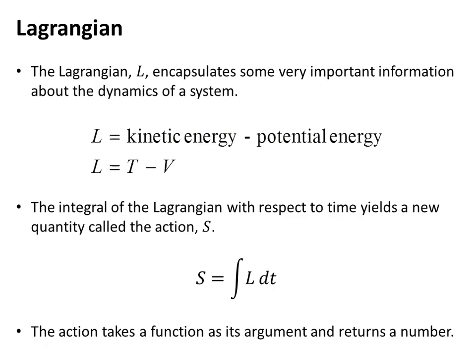Now the Lagrangian, which contains some important information about a system, is the kinetic energy minus the potential energy. We'll use the letters T and V for that. The integral of the Lagrangian with respect to time gives us a new quantity called the action. We'll use the letter S for that. This action takes a function as its argument and returns a number. That function is the Lagrangian.